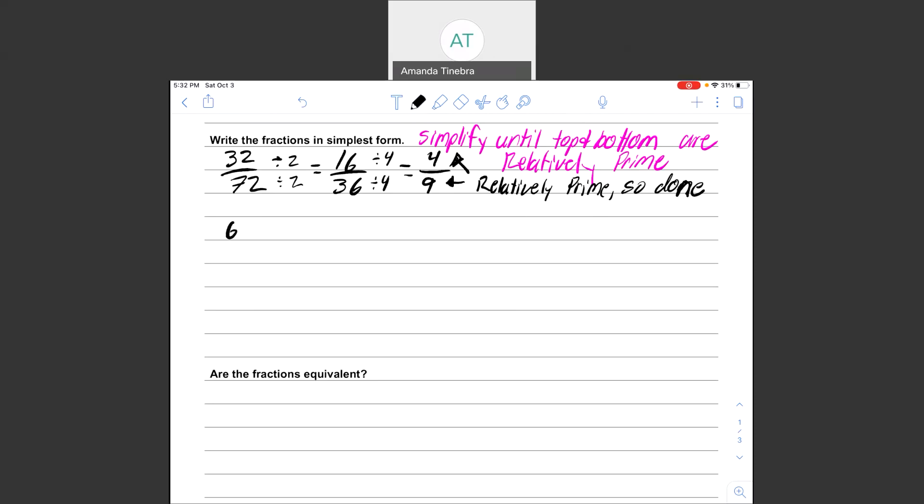If we do another example, let's say we do 6 over 21. Well, looking at 6 and 21, I know they're divisible by 3. 6 divided by 3 is 2. 21 divided by 3 is 7. Here again, I've reached a place where they're both relatively prime, so this is my simplest form.